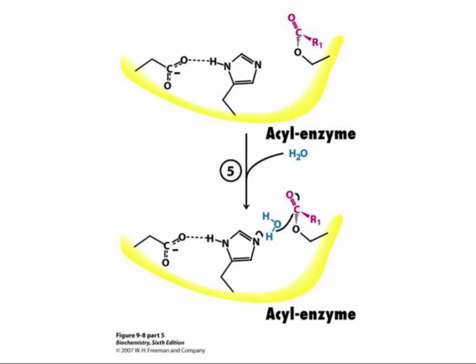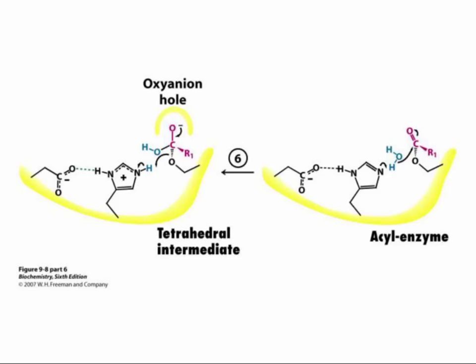In step five, there's a nucleophilic attack of a hydroxyl ion on the acyl enzyme intermediate. The production of the hydroxyl ion from water in the active site is promoted by the active site histidine, which acts as a base or proton acceptor to remove the proton from the water molecule. In step six, a second tetrahedral intermediate is formed. Similar to step two, this intermediate is unstable because of its anionic character — the negative charge on the oxygen. That anionic intermediate is again stabilized by charge groups in the oxyanion hole in the enzyme's active site, reducing the energy of activation of this second transition state.